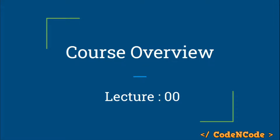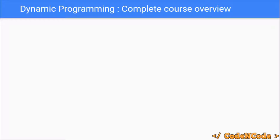Hello guys, this is Code and Code and this is Lecture 0 of this dynamic programming course series. In this lecture we are going to have a look at the course overview. We will be looking at the algorithms and problems we will be solving from DP, that is dynamic programming. We would start from very basic concepts and basic problems, then move on to intermediate, and finally solve some very advanced problems like digit DP.